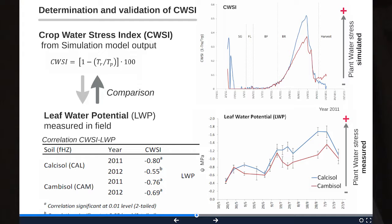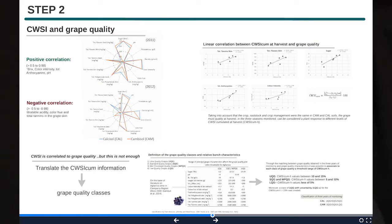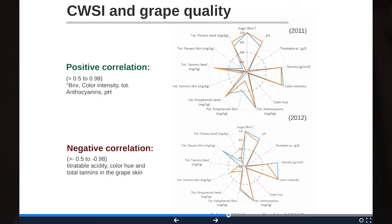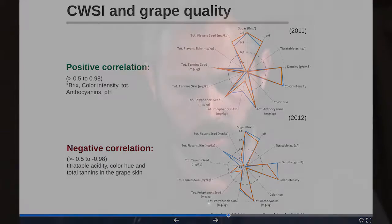The second step was to correlate this index to crop quality. Over two years we collected information on 13 bunch characteristics. We identified positive correlations for both soils with sugar, color intensity, total anthocyanins, and pH, and negative correlations with titratable acidity, color hue, and total tannins in the grape skin.